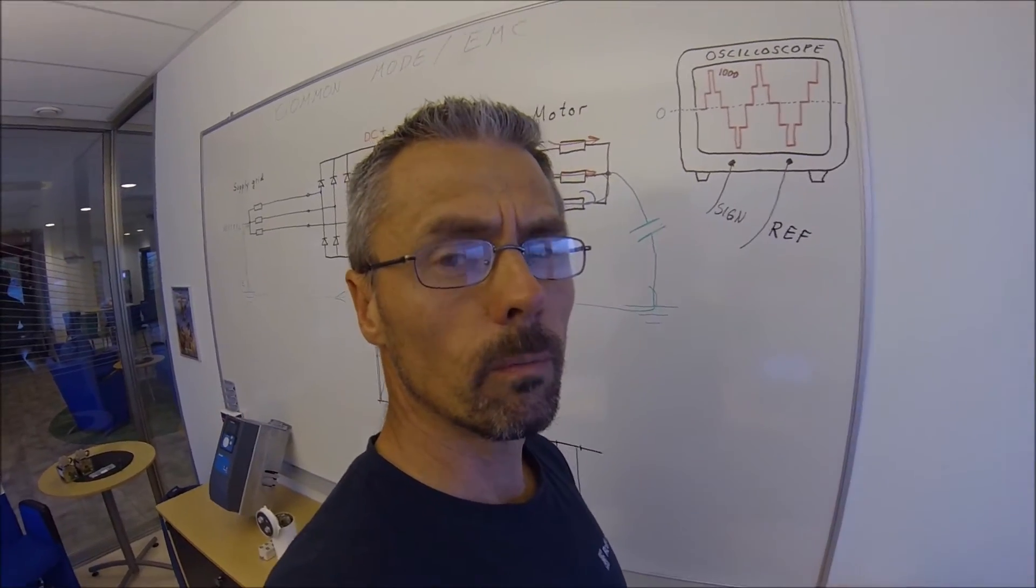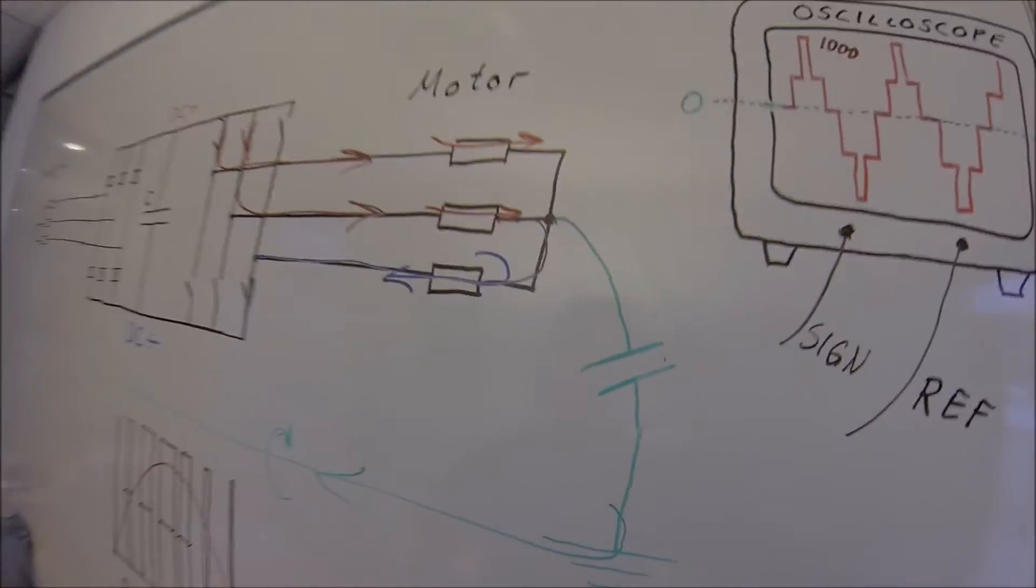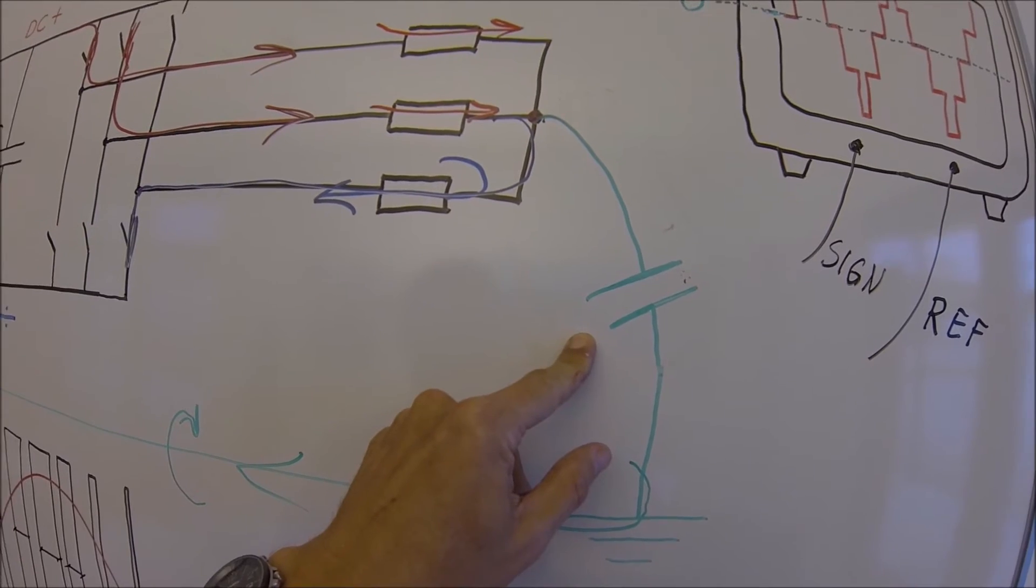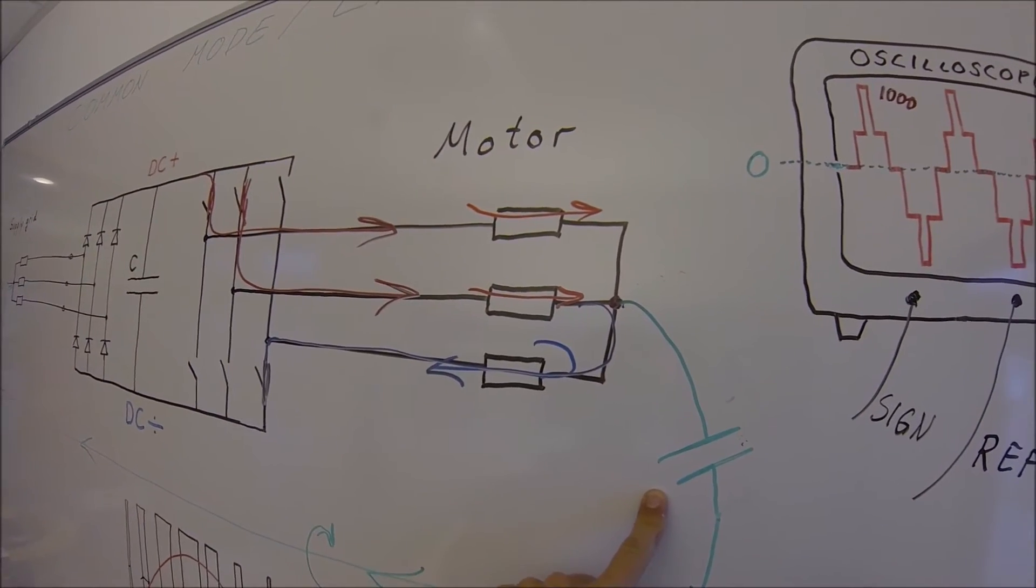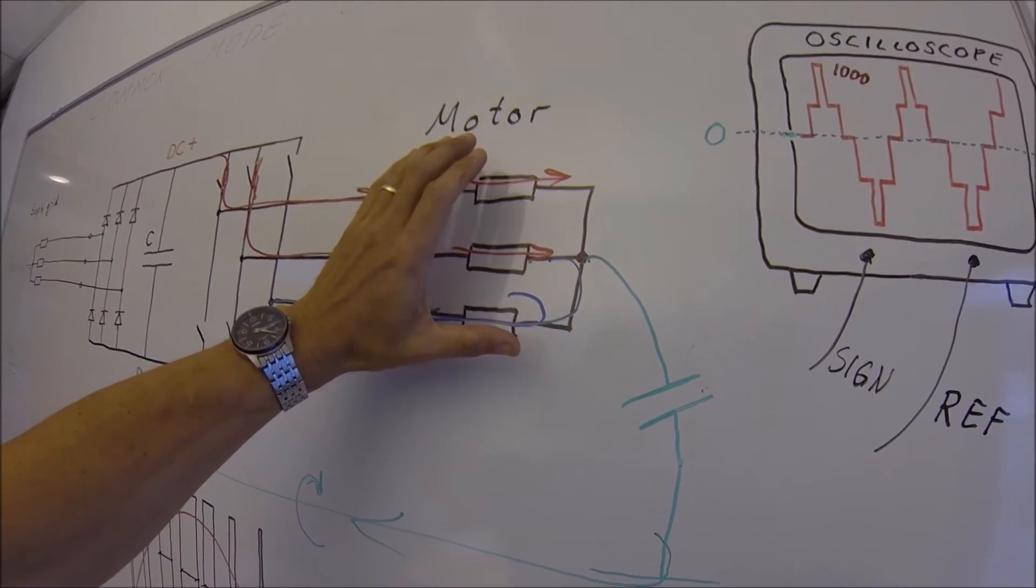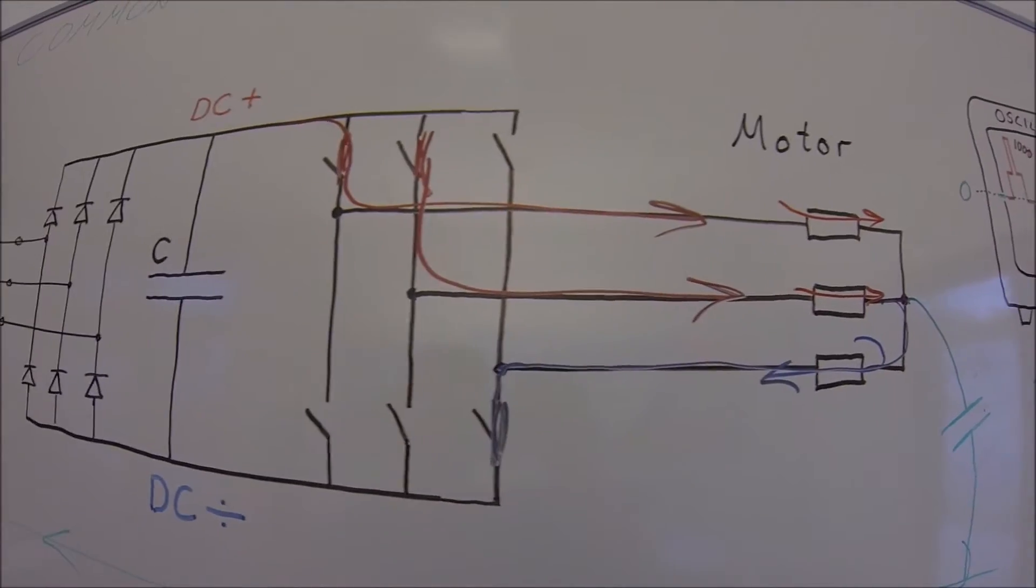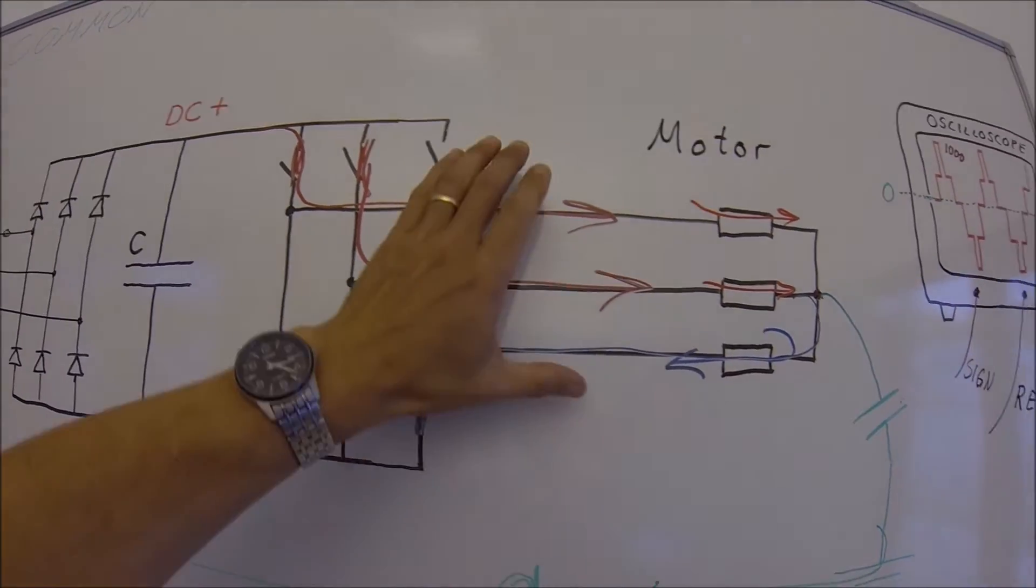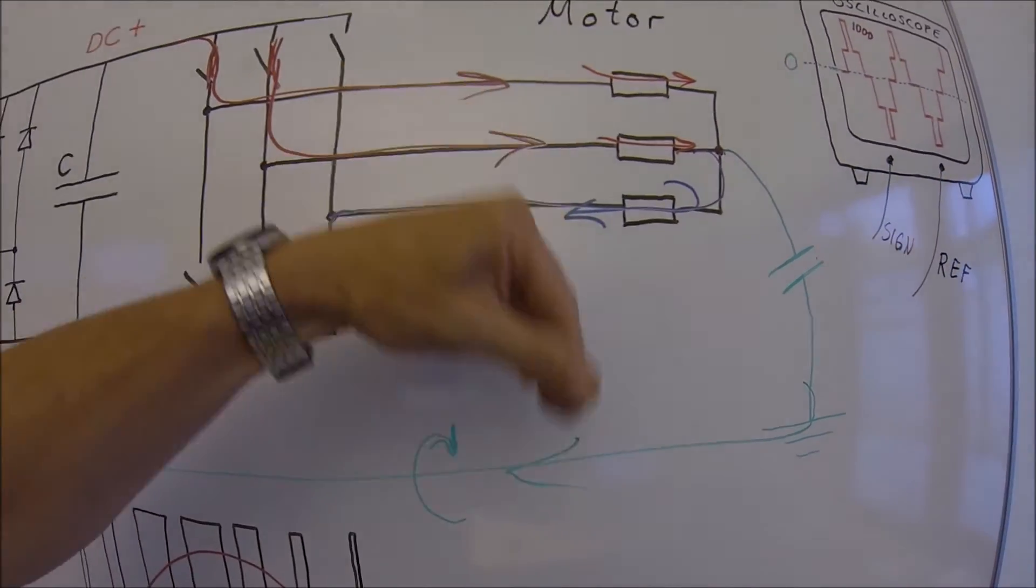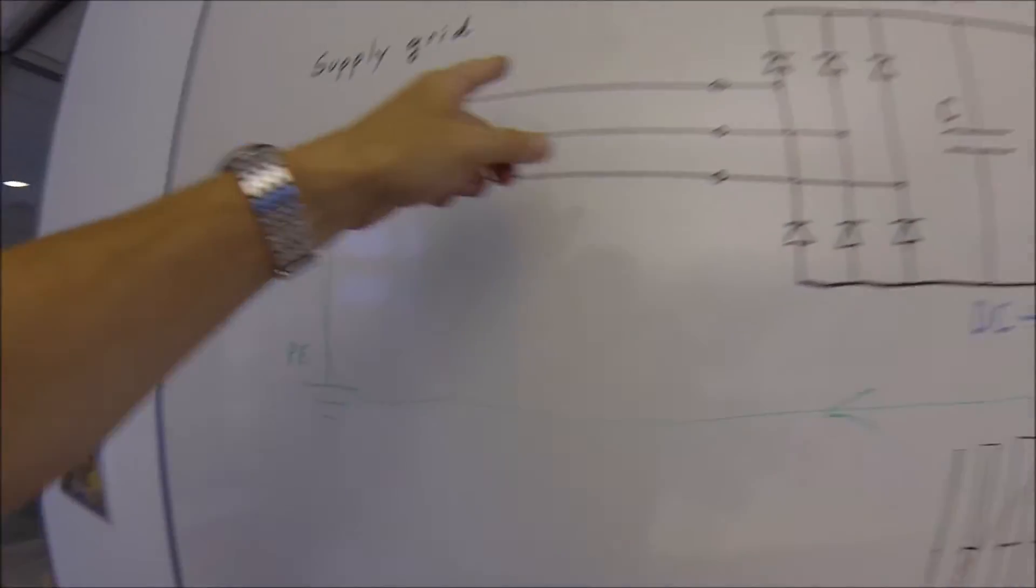What can we do to reduce the problems with common mode? Of course, reduce the size of this stray capacitance as much as possible. Good motors have very low stray capacitance between the stator windings and the metal chassis in the motor. Also good cables will help a lot. You don't want stray capacitance between the three phases and the protective earth because that will give a leaking current, producing circulating currents in the system.